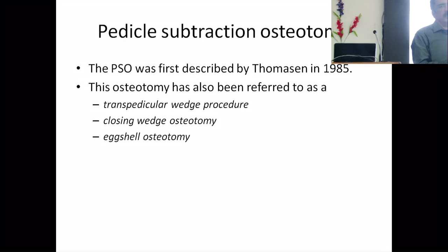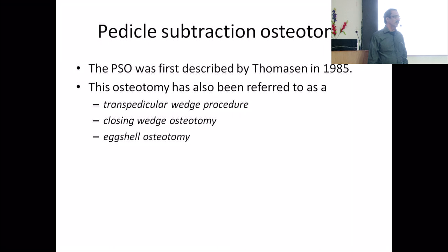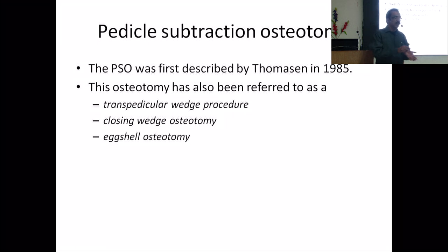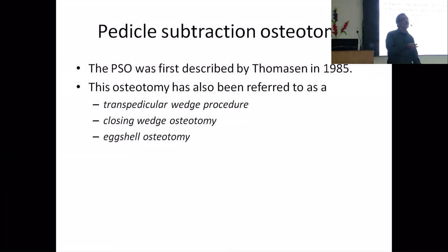SPO was actually done for ankylosing spondylitis. Smith-Peterson did the surgery for ankylosing spondylitis. He achieved the correction by giving too much force and fracturing the anterior part of the anterior column. The problem is that creates an anterior lengthening. If the aorta is calcified, it cannot stretch — there can be fracture of the vessels. That is why later it was changed to a flexible spine with a flexible disc, where we can do the SPO technique.